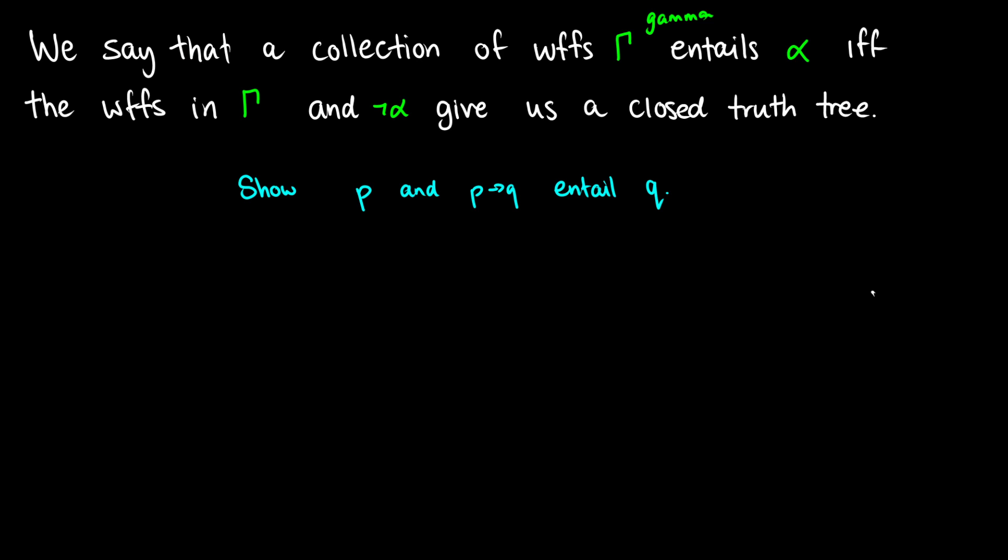So suppose I want to show that p and p arrow q entails q. Okay, well we can start by writing out our assumptions. So we have p, we have p arrow q, and we want to take the negation of our consequent q here. So we're going to take not q. So these are all just assumptions. This will be a very quick tree for our example.